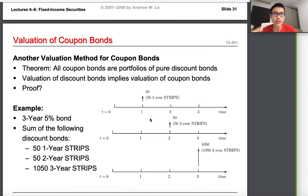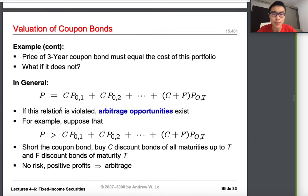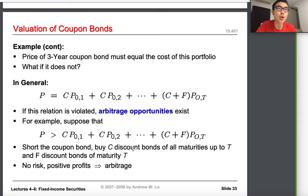Why are we so sure the coupon bond must equal the sum of these strips? The answer is something called arbitrage. Let me introduce the Law of One Price: if there are two identical goods in different locations, assuming free market competition, no trade frictions, and free pricing, then under these three assumptions identical assets must be sold at the same price when expressed in the same currency.